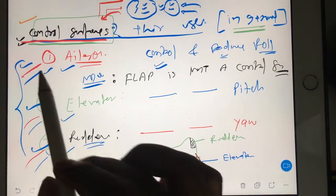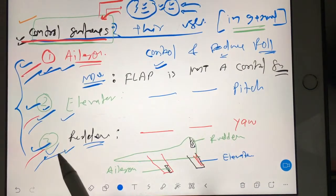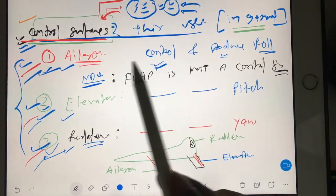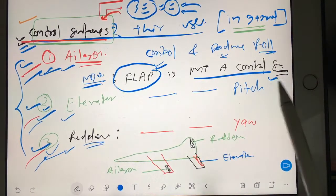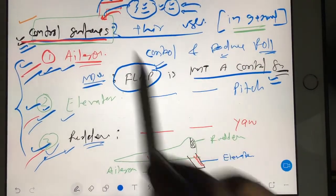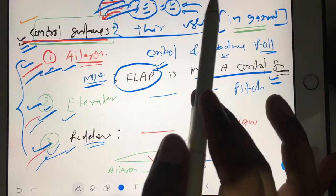So you understood aileron, elevator, and rudder - they are control surfaces. And after that, keep in mind flap is not a control surface. As I explained about the primary and secondary concept, primary control surface done, secondary done.